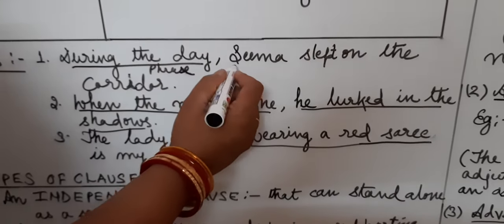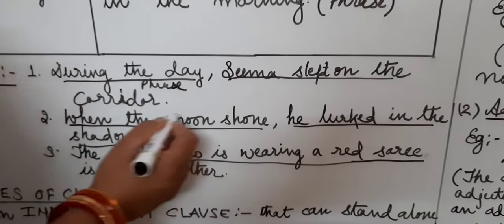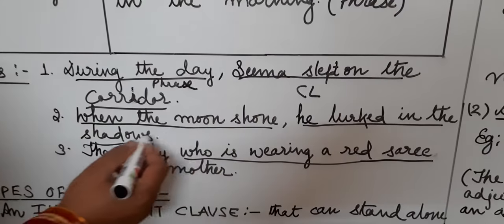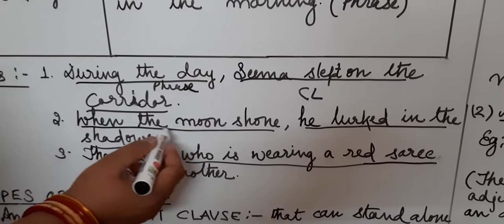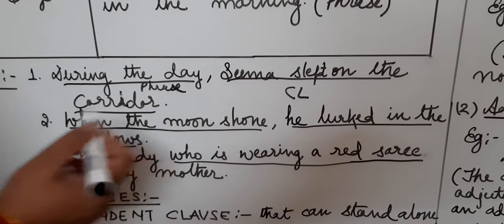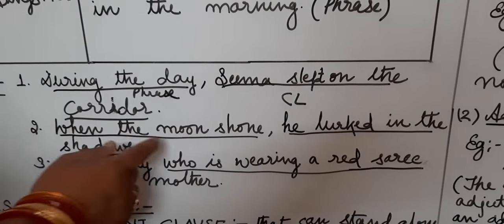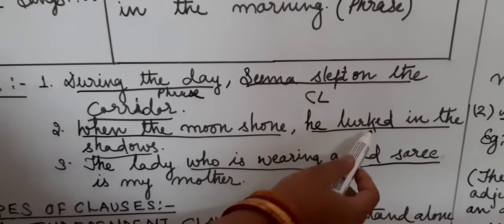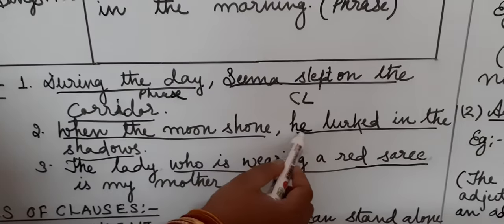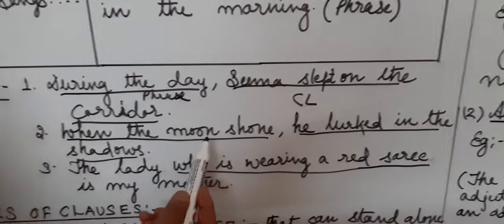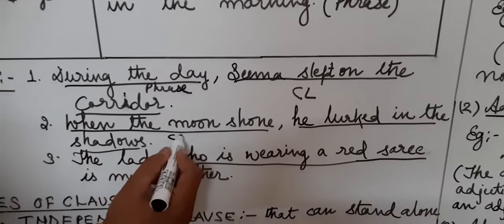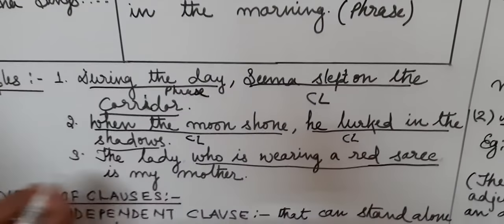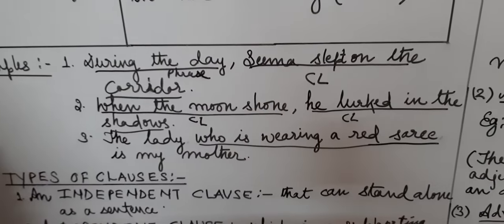So we see that 'Sima slept on the corridor' is a sentence which has a single clause. Now in 'when the moon shone' — moon is a subject, shone is a verb, so that is one clause. 'He lugged in the shadows' — he subject, lugged verb — it is also a clause. So in this sentence we have two clauses. In the next part we will see the difference between the clauses.